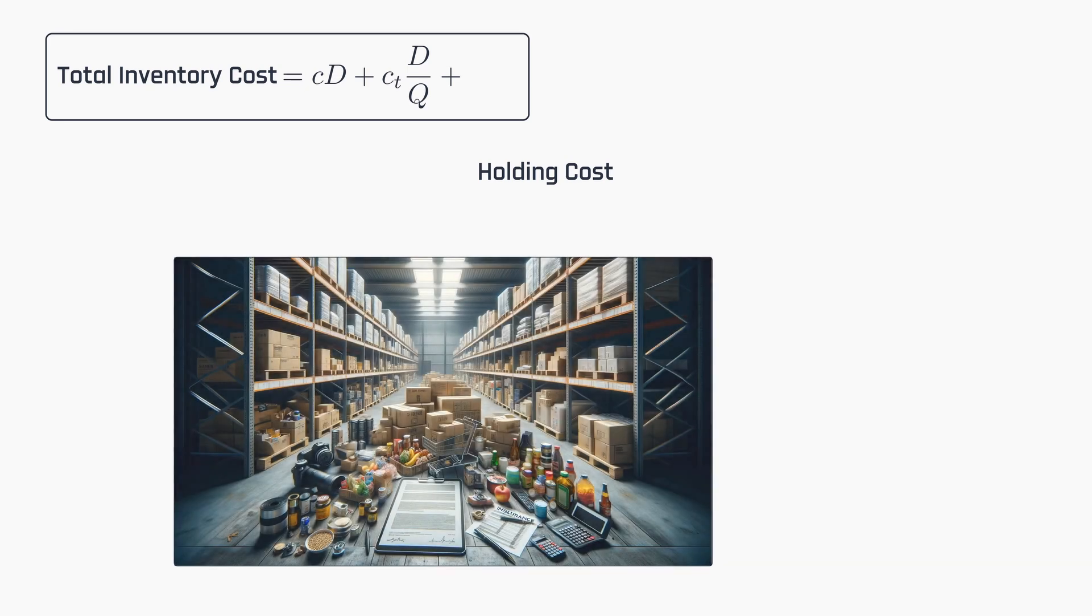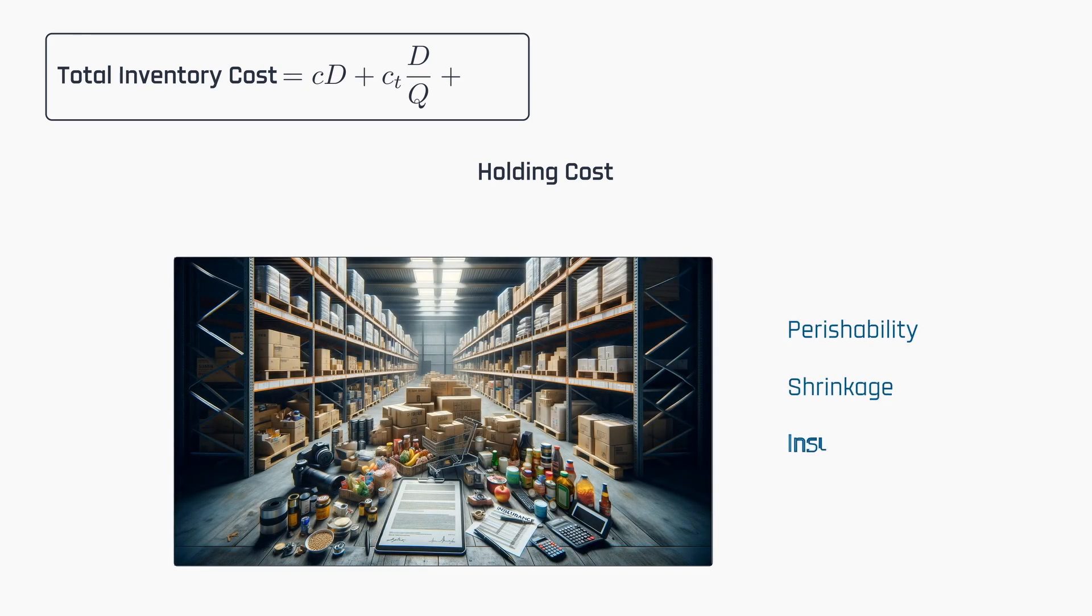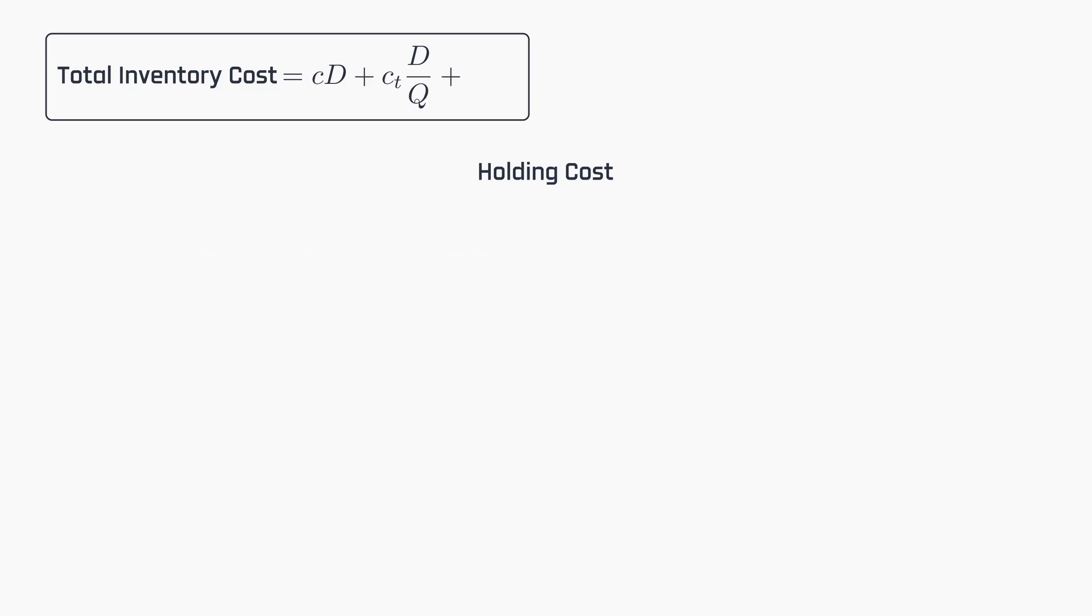Sometimes, concepts such as perishability, shrinkage, insurance or even taxation expenses are also included as part of the holding cost. Given the complexity of these factors, the EOQ model attempts to combine all these cost concepts into a single value, C sub E, which can be expressed, for instance, as a percentage of the unit value C. This percentage is known as the holding rate.